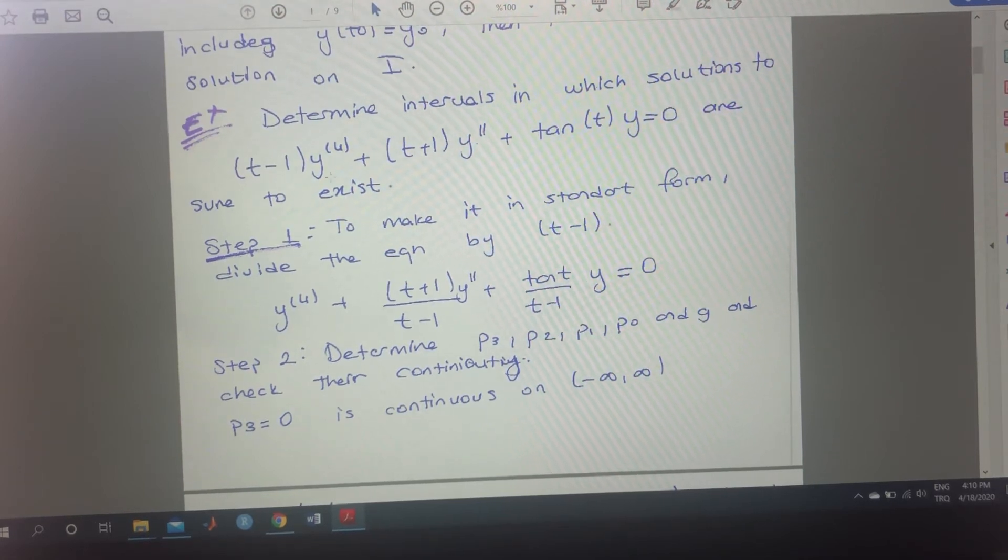And firstly, we need to make sure this is in the standard form. You know that in standard form, the highest derivative's coefficient should be 1. That's why we are dividing the equation by t minus 1. And this is what we get.